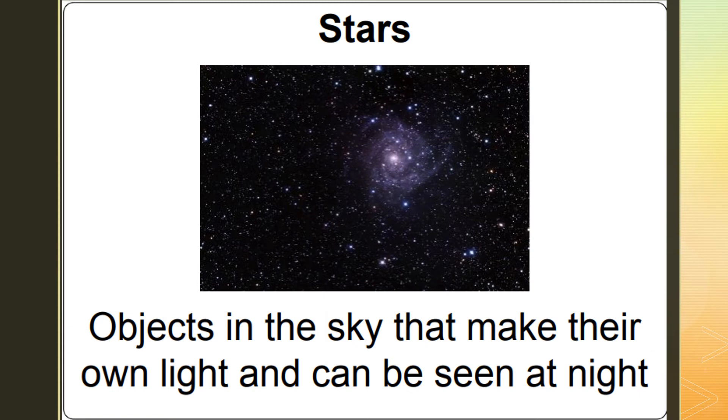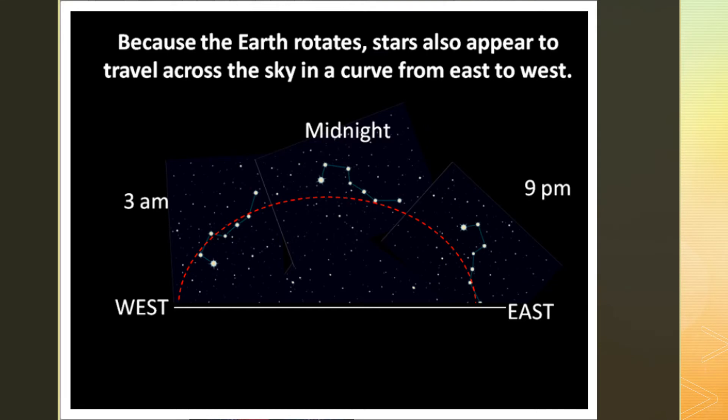Stars are objects in the sky that make their own light and can be seen at night. Because of the brightness of the sun during the day, we can only observe and record stars in the night sky. When our area on Earth turns toward the sun, the air scatters sunlight and turns the sky a blue color. At night, when our area on Earth turns away from the sun, sunlight is not scattered by our air. Countless distant stars are then visible, scattered across our night sky.